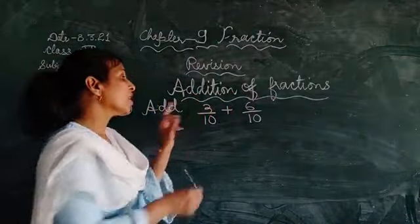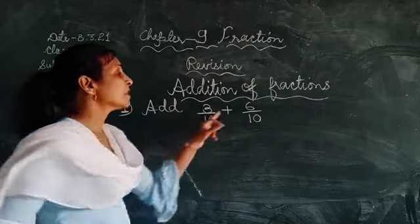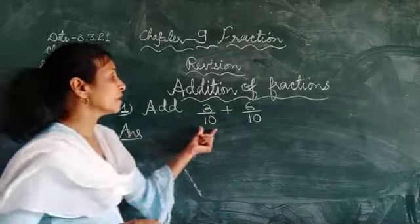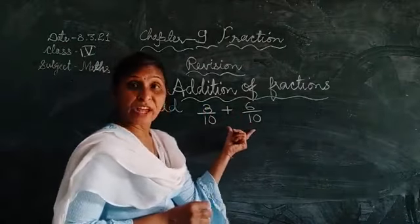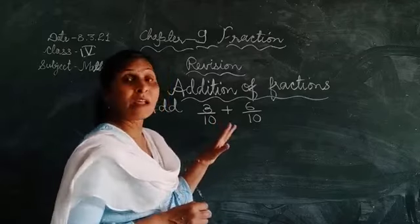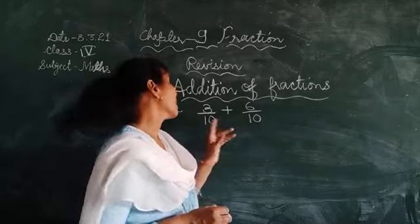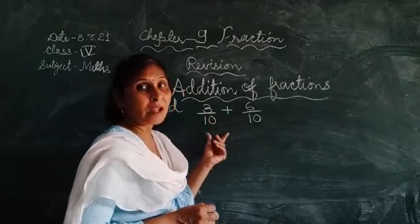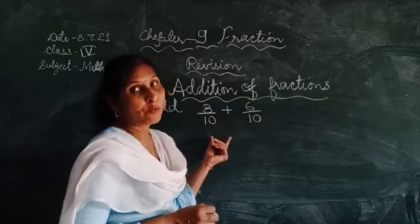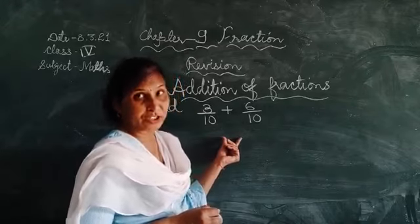Add 3 upon 10 plus 6 upon 10. Here the fraction is given. These two fractions, you see which type of fraction is this? This is a like fraction. Because denominators are same. Jiske denominators same hote hain, vo like fraction kehlaate hain. Like fraction.